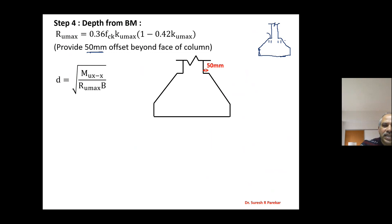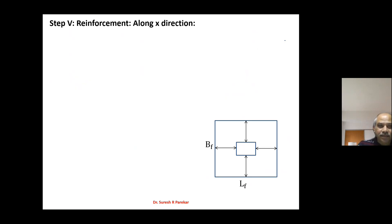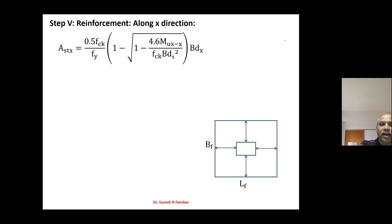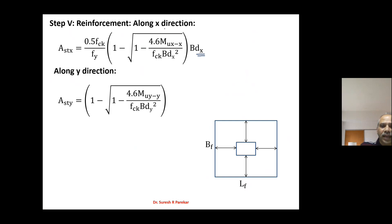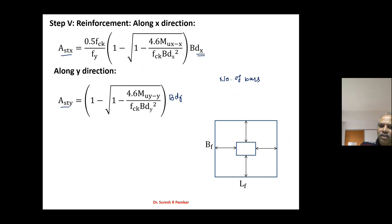Then we find reinforcement along X and Y directions. For X direction we use MUXX with depth DX, and for Y direction we use depth DY. The formula uses B into DY. Using this formula we calculate ASTX and ASTY, and we calculate the number of bars. In some books spacing is given, but it is always preferable to calculate the number of bars.